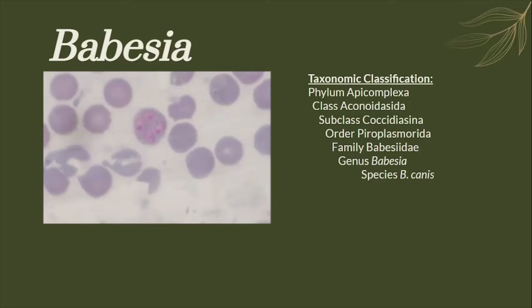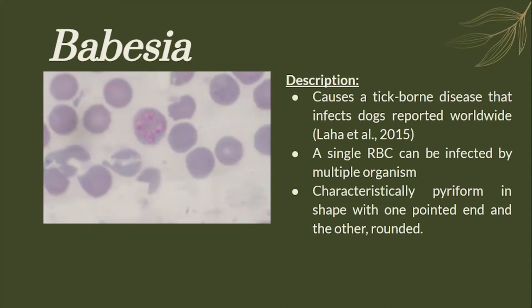The next species is Babesia canis from the genus Babesia. This species is a tick-borne disease that infects dogs, reported worldwide. A single red blood cell can be infected by multiple organisms, usually up to 16. It has a pyriform shape with one end pointed and the other rounded.